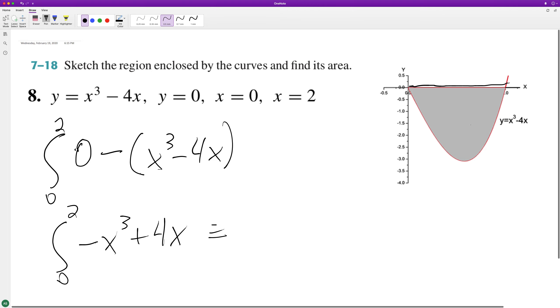So what's going to happen here is we're going to have negative x cubed over 4 plus 2x squared from 0 to 2.